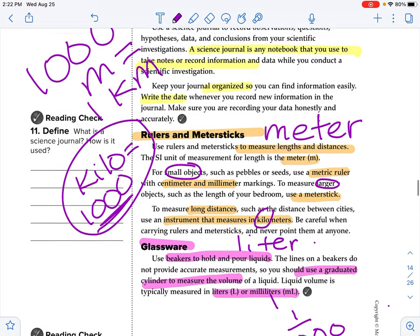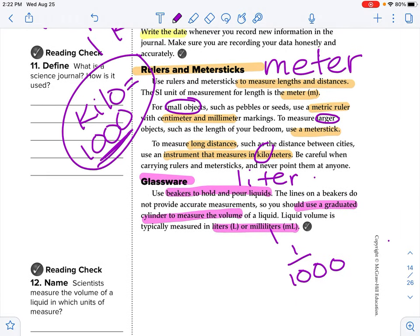Alrighty, so that is rulers and meter sticks. So we just have to be careful when you're carrying those and never point them at anyone. They are not lightsabers, right? Okay, glassware. Use beakers to hold and pour liquids. The lines on a beaker do not provide accurate measurements, so you should use a graduated cylinder to measure the volume of a liquid. Liquid volume is typically measured in liters or milliliters. So you probably have the point of reference for a two-liter, two-liter soda, right? So that is 2,000 milliliters. If you think back to when we did the Mentos Lab, when we wrote down that the Diet Coke was a two-liter, we also wrote down that it was 2,000 milliliters.